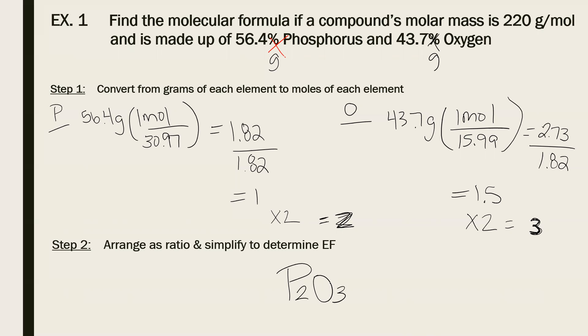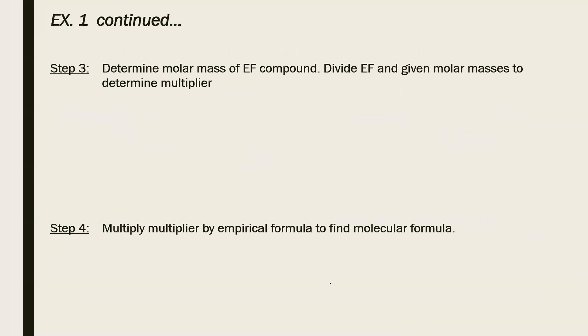So my empirical formula is P2O3. Okay, so you already know how to do that. Now we have to use this for the molecular. So step three, determine the molar mass of the empirical formula.